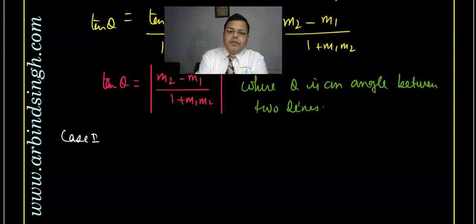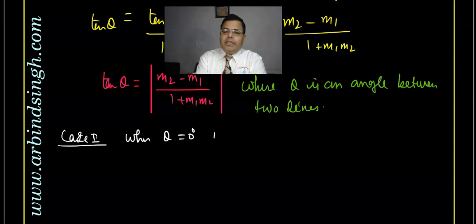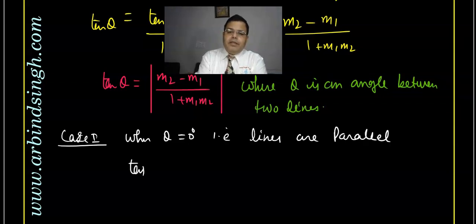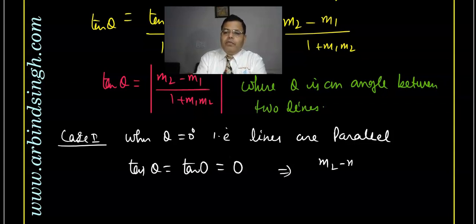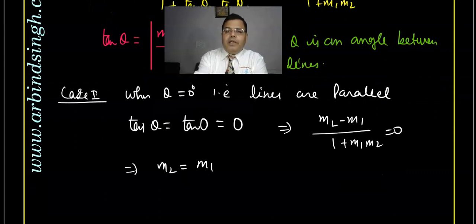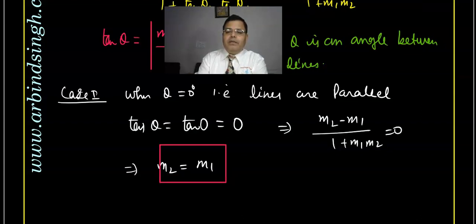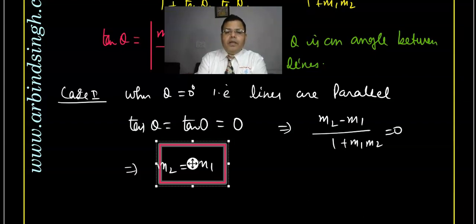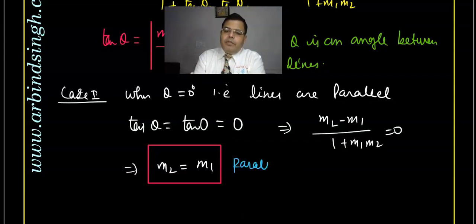Now for special cases — case one: when θ = 0, the lines are parallel. Then tan θ = tan 0 = 0, which implies m2 - m1 = 0, so m2 = m1. Therefore, when lines are parallel, their slopes are equal.